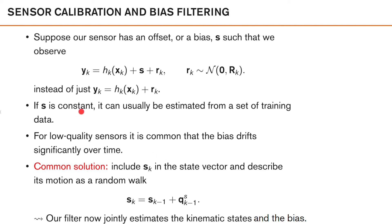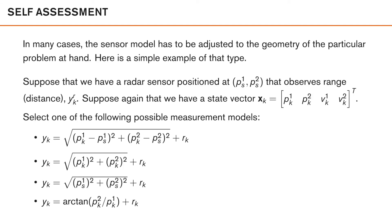Unfortunately, especially for low-quality sensors, it's common that the bias drifts over time or changes slowly over time, which means that we need to estimate it recursively in a filtering fashion. The most common solution in this case is that we include sk in the state vector and describe its motion using a random walk, for example. So, sk is equal to sk minus 1 plus some noise here. Once we have done this, our filter can now jointly estimate the kinematic state and our bias. Here is a small self-assessment question.